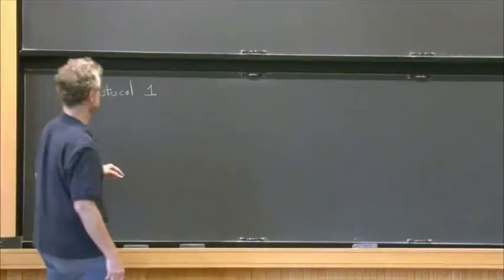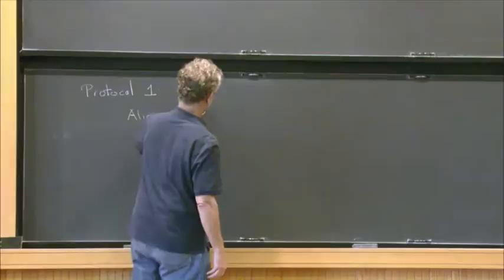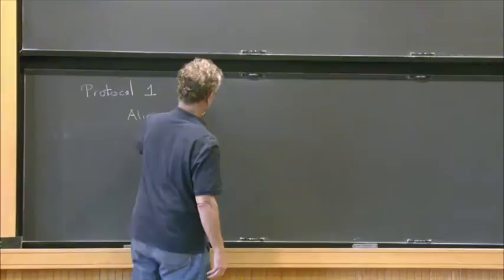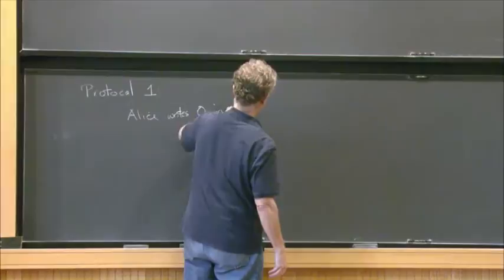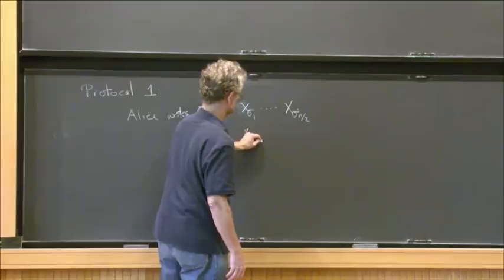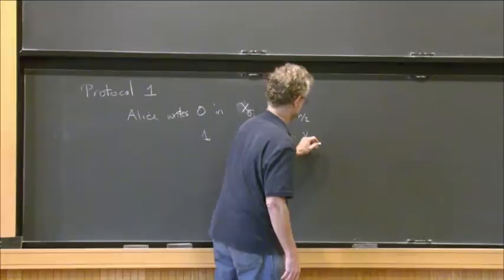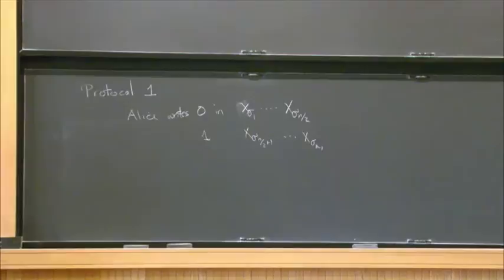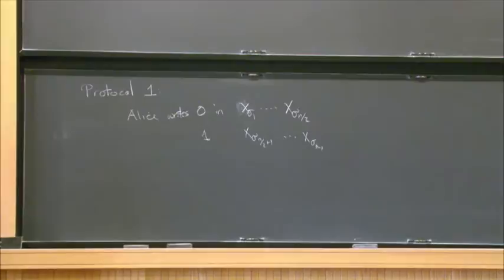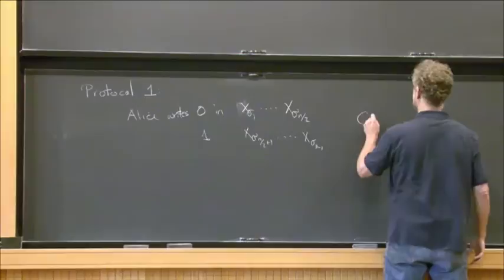Protocol one: Alice writes 0 in x_{sigma_1} and writes a 1 in x_{sigma_{n/2+1}}. The last bit gets filled in. Bob looks at the vector and by counting the number of ones can determine whether the last bit written was a 1 or a 0. Once he knows that, he can output a set of size n/2 which contains sigma_n. So the cost will be n/2.